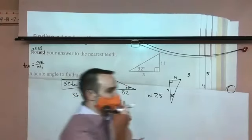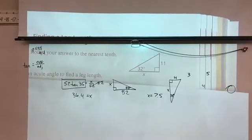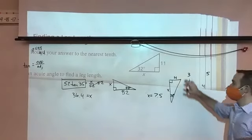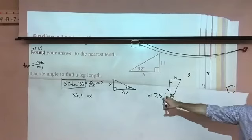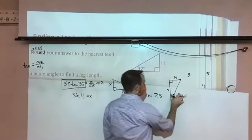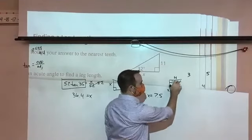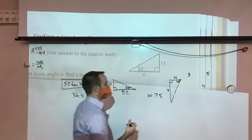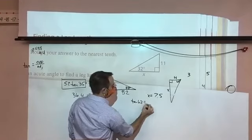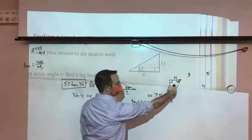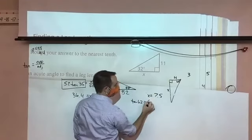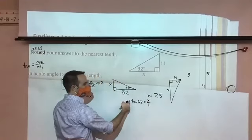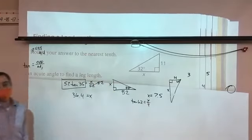We could also set up the same problem using the complementary angle. Instead of 28 degrees, if we talk about the other acute angle — 62 degrees — then the opposite is x and adjacent is 4, so tangent of 62 equals x over 4. Four times tan 62 also gives 7.5. It's always opposite over adjacent, so just be clear about which angle you're referencing.